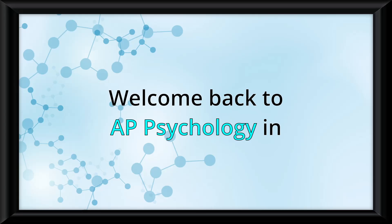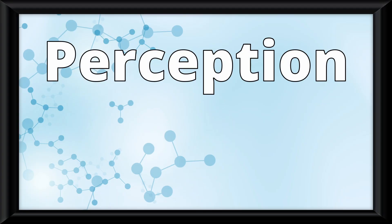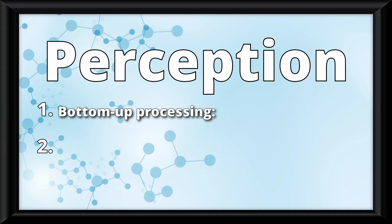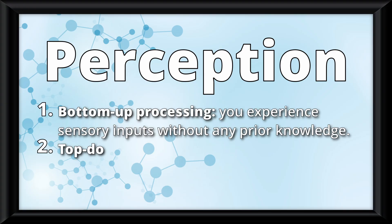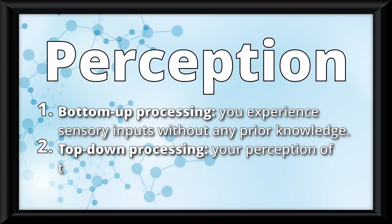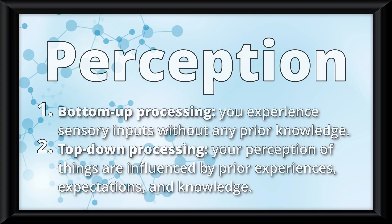Welcome back to AP Psychology in under 3 minutes. Perception involves two things: bottom-up processing, which is where you experience sensory inputs without any prior knowledge, and top-down processing, which is where your perception of things are influenced by prior experiences, expectations, and knowledge.